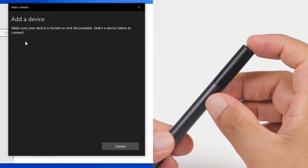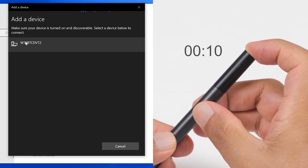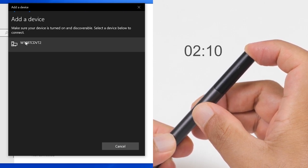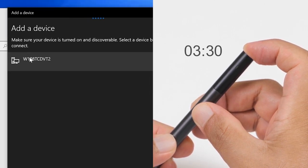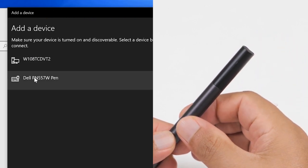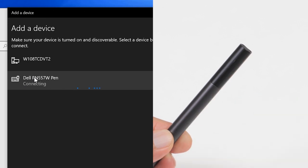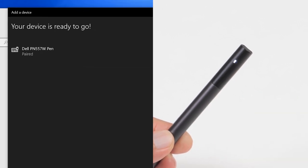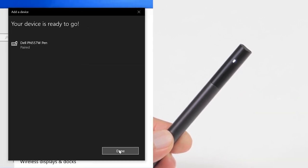On the pen, enable pairing mode. To do this, press and hold the top button on the pen for 3.5 seconds. The Bluetooth pairing light blinks to confirm that pairing mode is enabled. Now, select the Dell PN557W pen from the list in Windows to complete the pairing process.